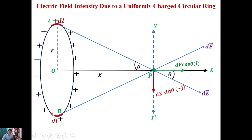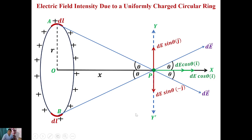Due to this element at B, DE also has two components. This angle is also theta because this element is exactly opposite to point A. DE has two components: along the positive x-axis that is DE cos θ i-cap, and along the positive y-axis direction that is DE sin θ j-cap. We can see that DE sin θ (−j-cap) from element A and DE sin θ (j-cap) from element B are equal in magnitude and opposite to each other.